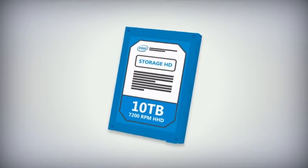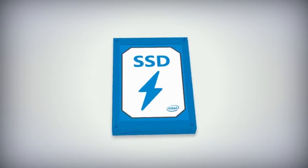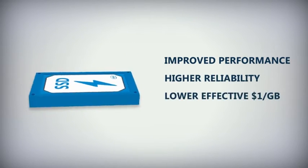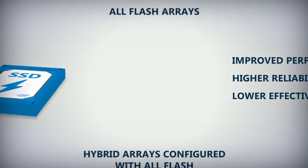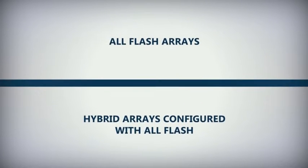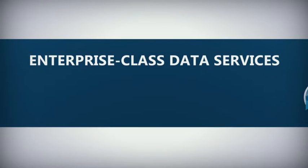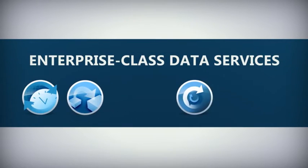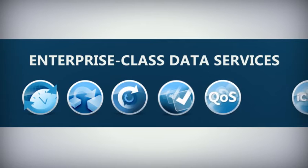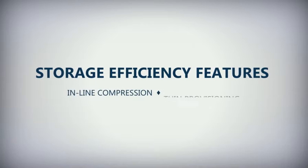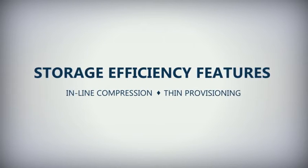As a result, vendors are aggressively flash-optimizing their offerings to provide improved performance, higher reliability, and lower effective dollar per gigabyte. The distinction between all-flash arrays and hybrid arrays configured with all-flash has become narrower as more and more arrays offer enterprise-class data services such as snapshots, clones, encryption, replication, quality of service, and integrated copy data management, as well as storage efficiency features like inline compression and thin provisioning.